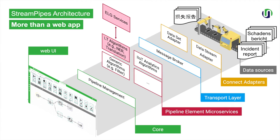Looking under the hood, StreamPipes is more than just a web app. Behind the web UI, StreamPipes' microservice-based architectural design, empowered by cloud-native technologies such as Docker and Kubernetes, comprises several distinct layers. The event-driven application approach in processing pipelines centers around a central message broker in the transport layer for data exchange between connect adapters and pipeline elements, as well as among pipeline elements in a publish-subscribe fashion. This flexible design eases the integration of more ELG services, and therefore extends the set of language technology pipeline elements within StreamPipes.